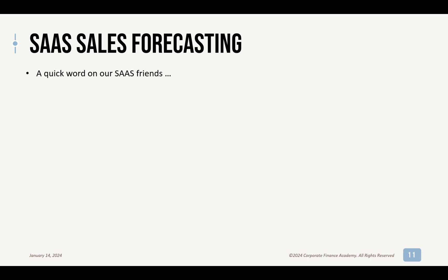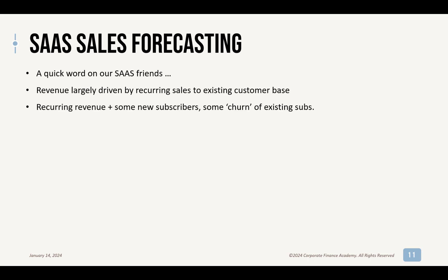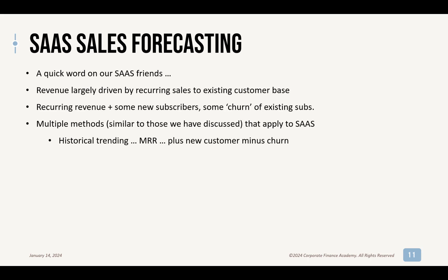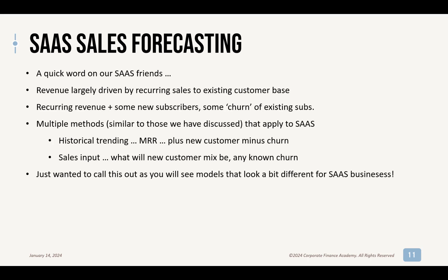A quick note for our SaaS friends: revenue is largely driven by recurring sales to an existing customer base, plus some new subscribers, minus a little churn. The methods we talked about aren't that dissimilar — they can actually apply to SaaS. You might use historical trending, knowing how many customers are regularly on your monthly recurring revenue, how many are churning, and your sales team can give an estimate on new customers. I just wanted to call this out because these models will look a little different from a manufacturing, healthcare, insurance, or financial services business.